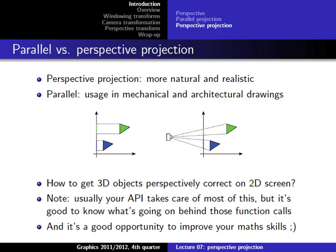The major question we want to deal with today is: how do we create a perspectively correct projection of 3D objects onto a 2D screen? You've already done this in practice — you created 2D images of 3D objects — but the API did most of the work for you. It's always important to know not just how to call a function, but how that function works. Especially when there's a bug in your program and the result doesn't look right, knowing what's going on behind the scenes really helps you find it.